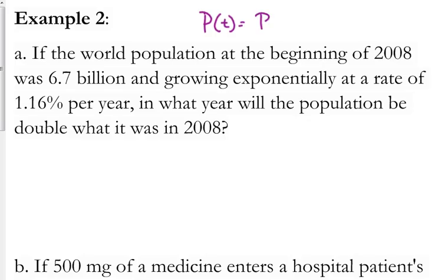is equal to p sub 0, that's the initial population, times 1, I'm going to say plus or minus. If your population is growing, then it's plus. If your population is decreasing, then it's minus. The rate, but that must be expressed as a decimal, not as a percent. You've got to convert the percent to a decimal, and that is raised to the t. That is your basic exponential model for growth or decay.